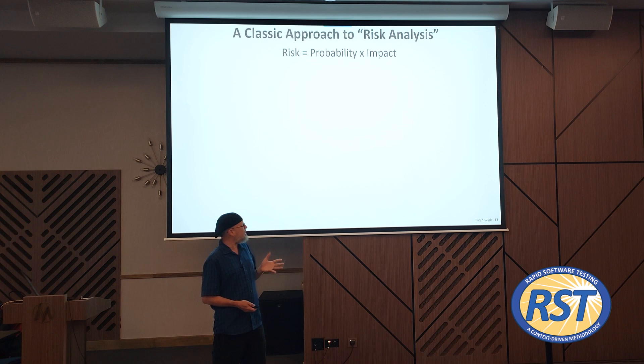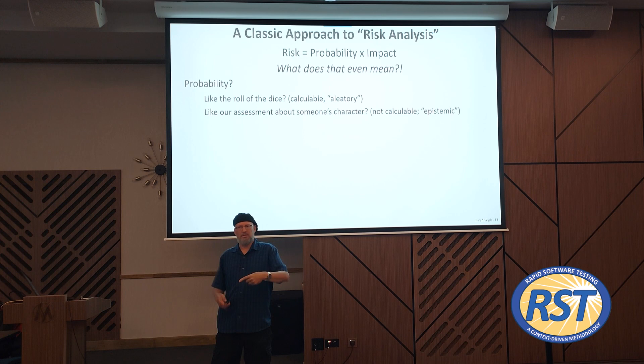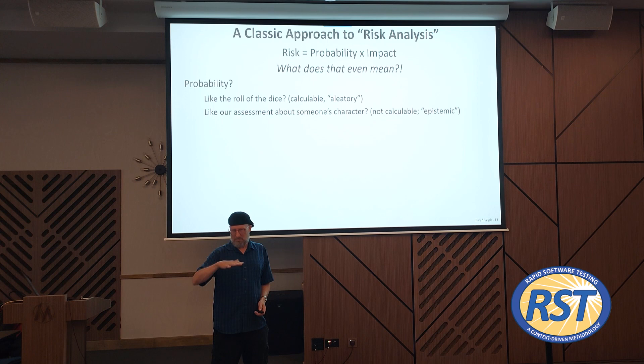There's a classic approach to risk analysis built on the idea of probability times impact. Probability — what's that? It's the probability that some problem will happen. But what does it even mean? Are we talking about probability in the same sense as for a game — a ludic probability, sometimes called aleatory probability, from the Latin word for dice?